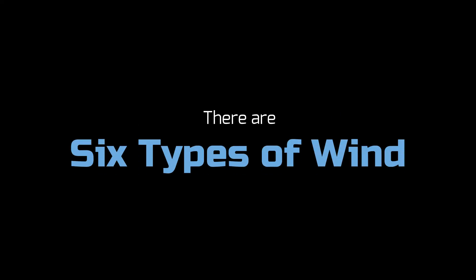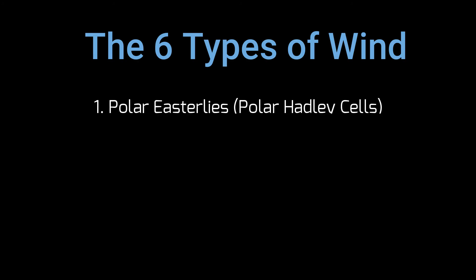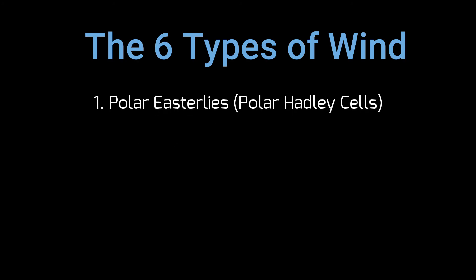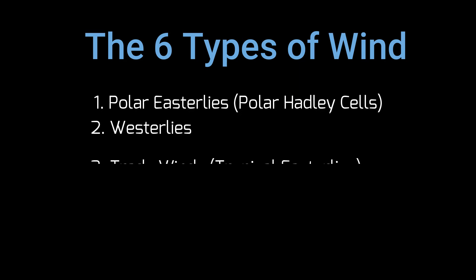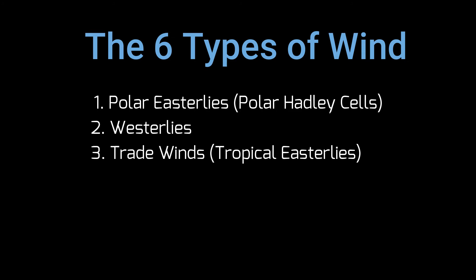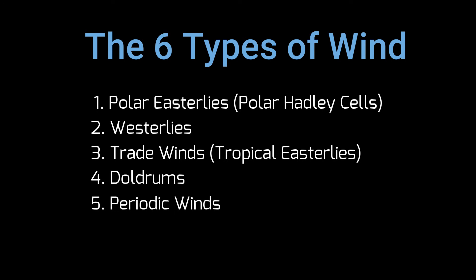There are six types of wind: 1. Polar easterlies or polar Hadley cells. 2. The westerlies. 3. Trade winds or tropical easterlies. 4. The doldrums. 5. Periodic winds. 6. Local winds.